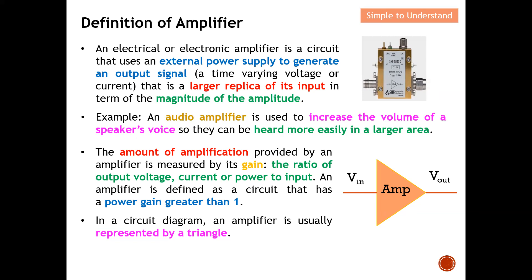The amount of amplification provided by an amplifier is measured by its gain — how big or how small. The gain is the ratio of either the output voltage over the input voltage, or output current over the input current, or output power over the input power. In short, the gain is the output over the input, whether it is voltage, current, or power.